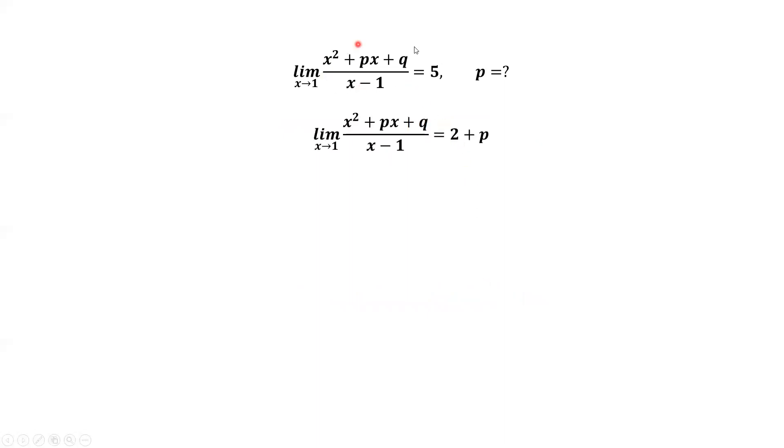From the given condition, the limit equals 5. This implies 2 plus p equals 5. Solving this equation, we have p equals 3.